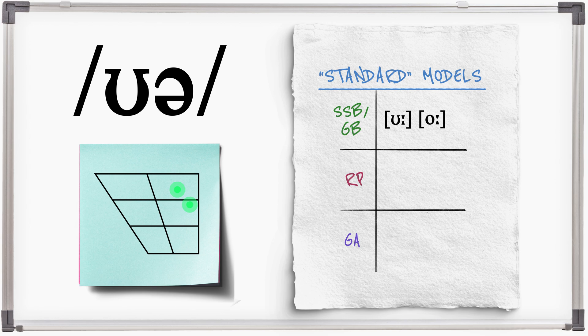In RP the diphthong will be used: /ʊə/, surely, pure. In General American there is no separate phoneme for /ʊə/. It is a near-close back vowel plus R: surely, pure.